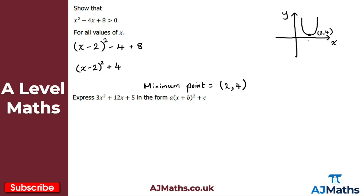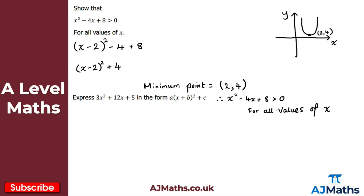Clearly, because the y-coordinate is greater than 0 — it's above the x-axis — the full quadratic is strictly greater than 0 for all values of x. Therefore, x squared minus 4x plus 8 is strictly greater than 0 for all values of x. That's our solution to the first example.